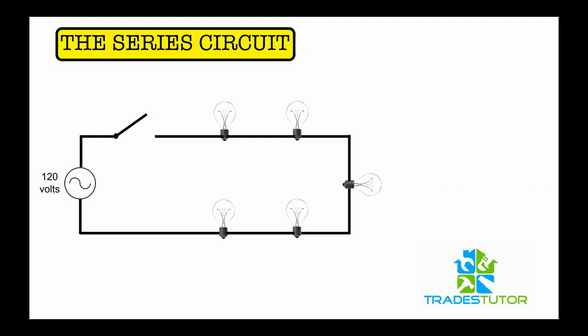There you see all the five light bulbs in a row in one path. So that's the idea of a series circuit. There's one path for electricity to flow. You can see on the left hand side we have 120 volts alternating current.